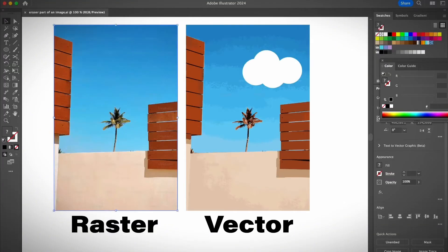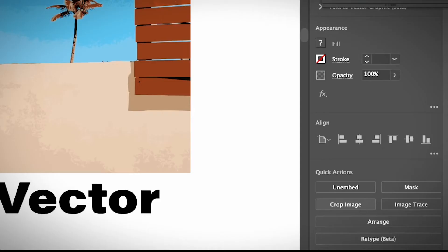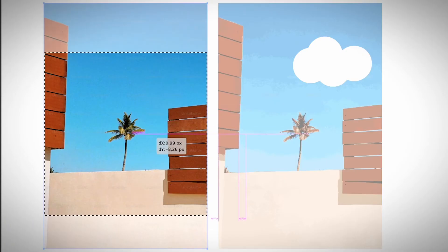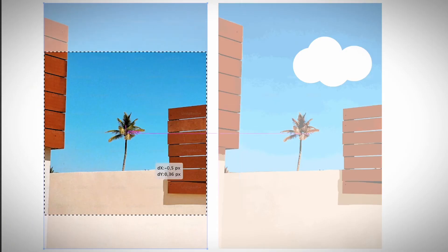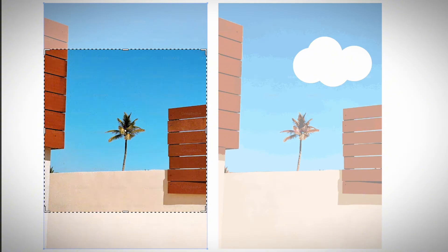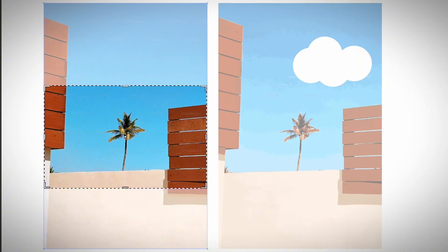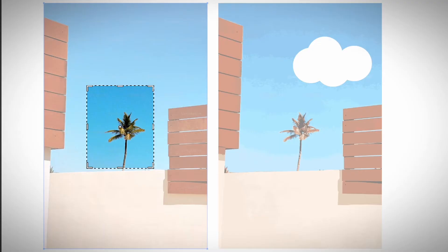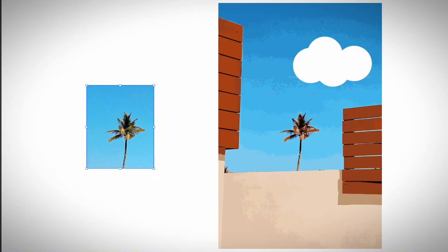So if you have the image selected, you can go to the properties panel under quick actions and you will see the crop image option. Go ahead and click on that, and you can adjust the crop area of the image. Maybe if you would only want to keep the coconut tree, the palm tree. So that's the easiest way to remove a part of the image in Illustrator.